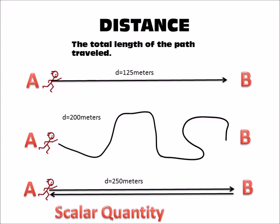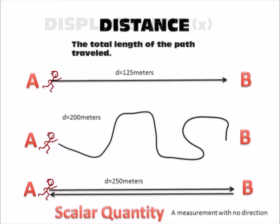Distance is the total length of the path traveled. Distance is referred to as a scalar quantity — a scalar quantity because it doesn't have a direction. A scalar quantity is simply a measurement with no direction.